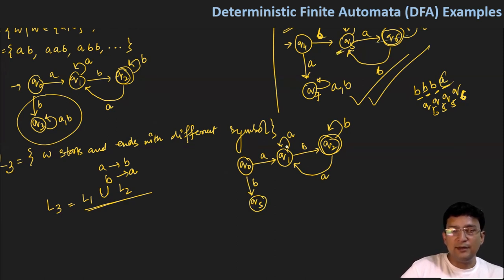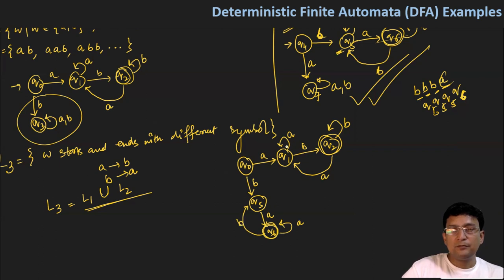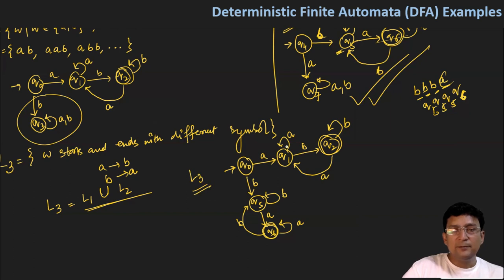I have drawn the L1 part horizontally; I am drawing the L2 part vertically, but the meaning is the same. If I get an A, I will move to Q6 state, which is the final state. If I get another A, I will stay at the Q6 state only. If I get a B, I will move to Q5 state. If I get another B in Q5 state, I will remain in the Q5 state. So now what you see is that this is the automata for language L3, and this language L3 is the union of languages L1 and L2. Hence, we have designed the DFA for this, which is also the union.